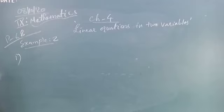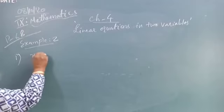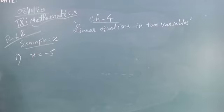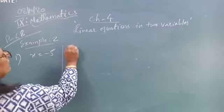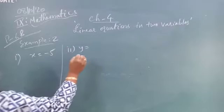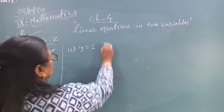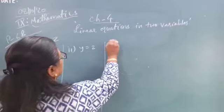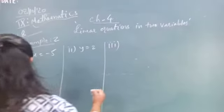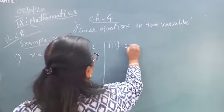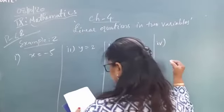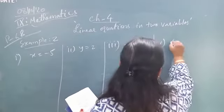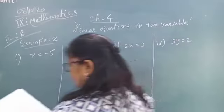Now the questions given are: number 1, X is equal to minus 5; number 2, Y is equal to 2; number 3, 2X is equal to 3; and number 4, 5Y is equal to 2.